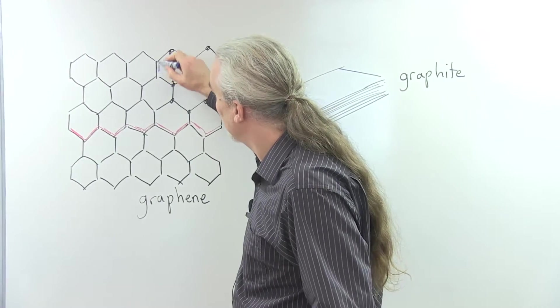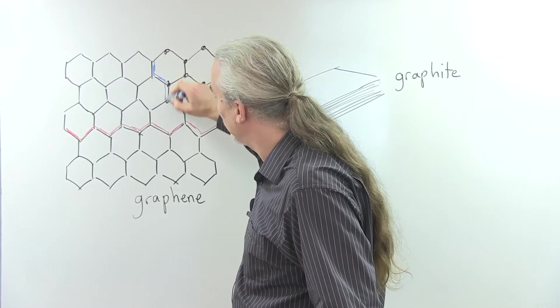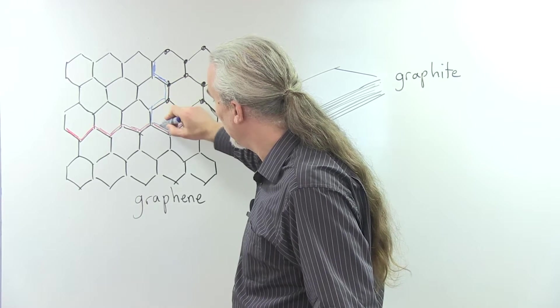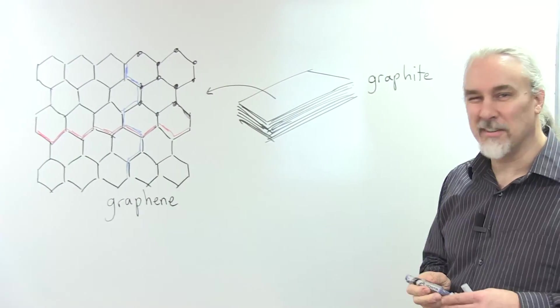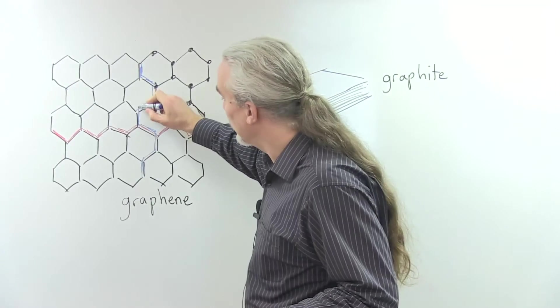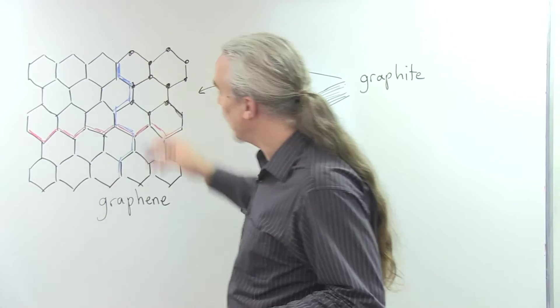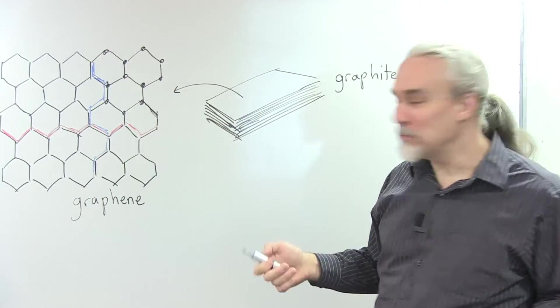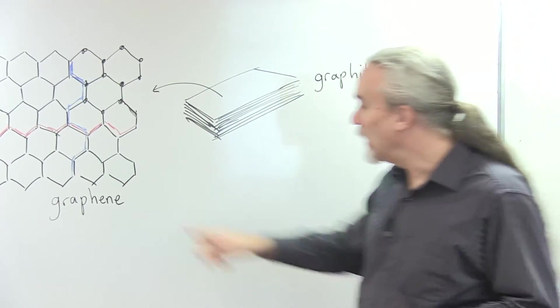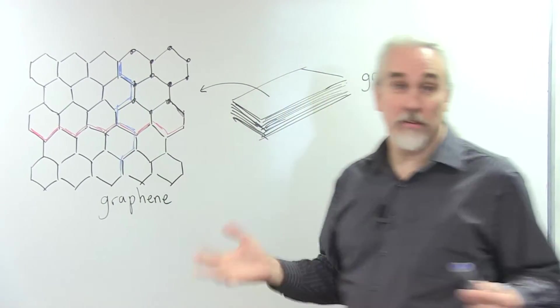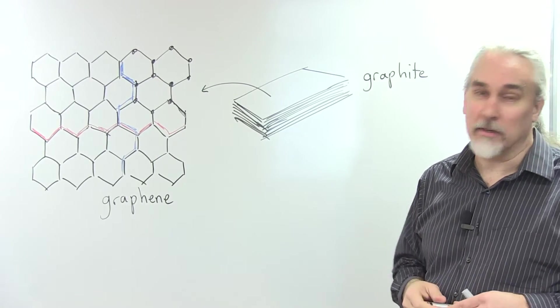There are other directions where the bonds make a pattern that we call armchair. It's kind of hard to see the armchair, but if you look at this collection of bonds sideways, it looks like an armchair that you could sit in here, and you could rest your arms up there. So we'll call that armchair, and along this direction, graphene is an insulator. The electrons can't pass in that direction.